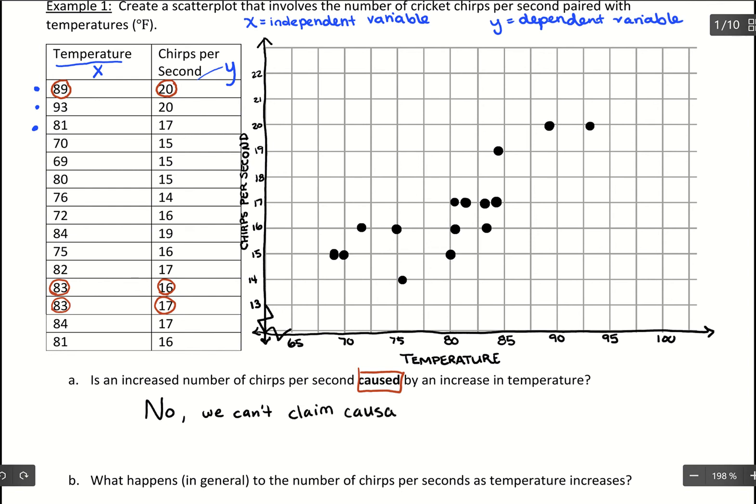With observational data, there can be these lurking variables. We don't really know what's making the crickets chirp more. Maybe it is the temperature - when it's warmer, they get more talkative. Or maybe it's something else that when it's warmer outside, some other variable is actually causing the crickets to chirp more. We don't know if it's actually temperature itself.